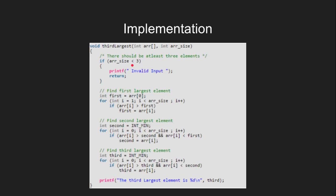Let's look at the implementation in C++. We initialize maximum as the zeroth element of the array, then traverse through the array once and find the value of the largest element. We store the largest element as 'first' and initialize the variable 'second' as INT_MIN to store the second largest element. We iterate through the array again and find the greatest element smaller than 'first', storing the second largest element in 'second'. Similarly, we find the third largest element and store it as 'third'. In the end, we print the third largest element.